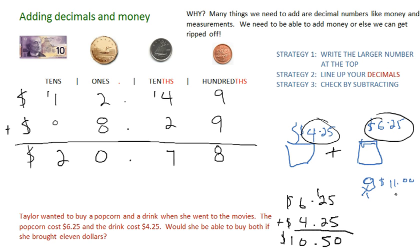So if I compare that, she brought eleven dollars and she needed ten dollars and fifty cents. So did she have enough? Yeah! If she paid eleven dollars and it cost ten dollars and fifty cents, she would actually have that much left over by subtracting it. This means that she had five dimes, which is fifty cents left over. Hey, maybe you could pitch in and buy a pack of Skittles or something.